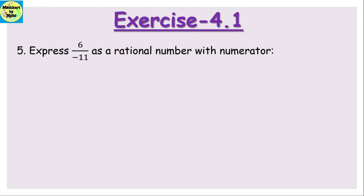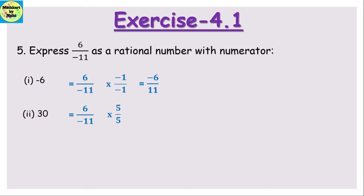Question number 5: express 6/(-11) as a rational number with a given numerator. This is similar to question 4 but now we form a new rational number with a given numerator instead of denominator. For numerator -6: we multiply by -1/(-1), giving -6/11. For numerator 30: we multiply 6 by 5, so 6 × 5 = 30 and 11 × 5 = 55, giving 30/(-55).